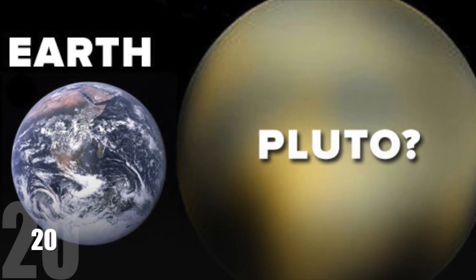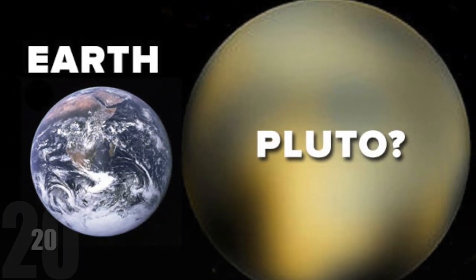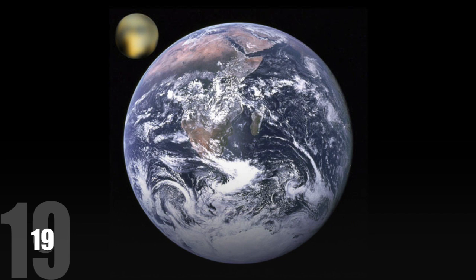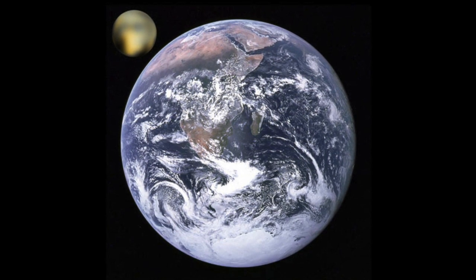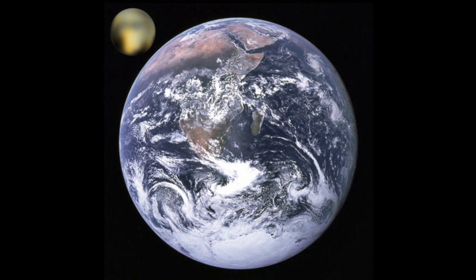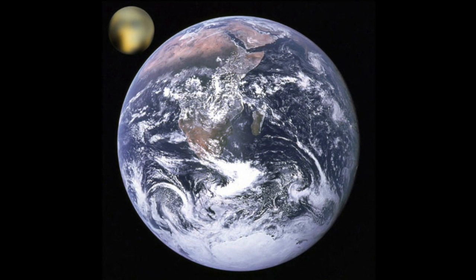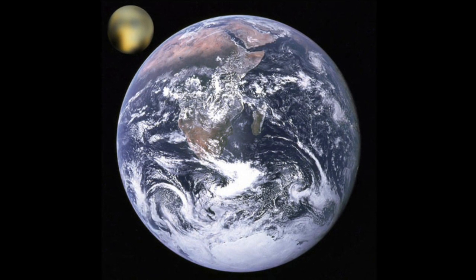20. When Pluto was discovered, it was initially believed to be larger than Earth. 19. Now astronomers know that it's about 1,455 miles across, less than 20% as big as the Earth.